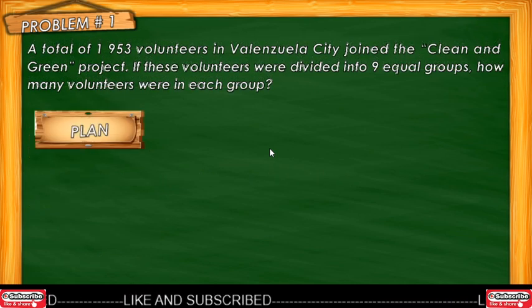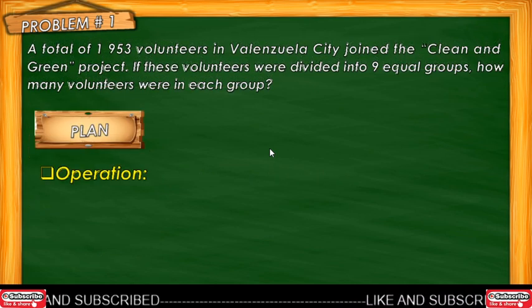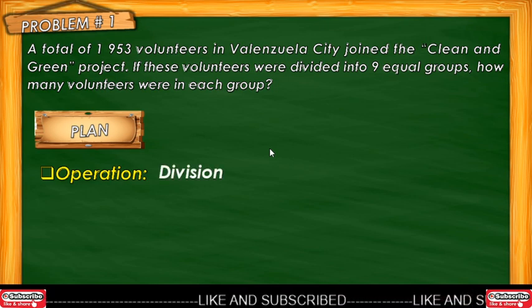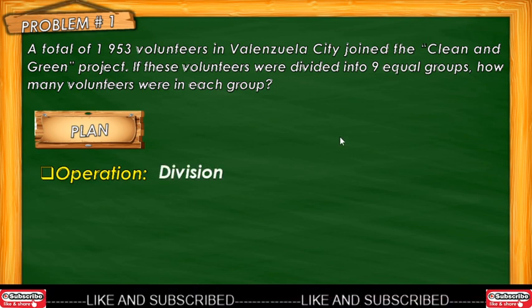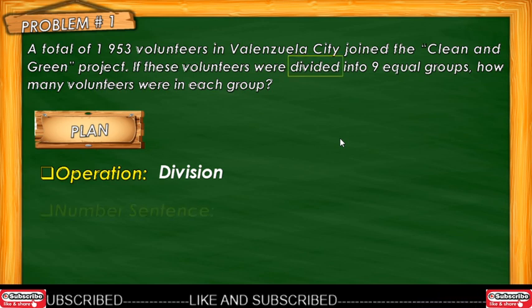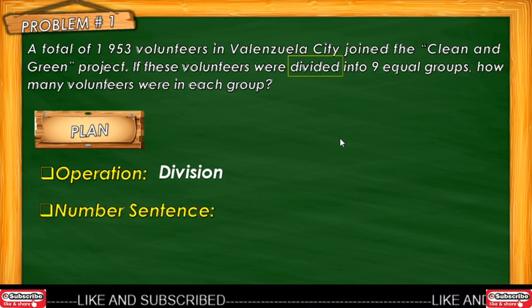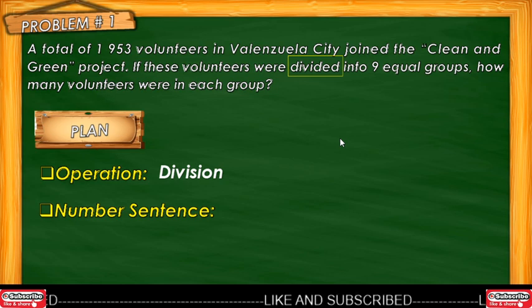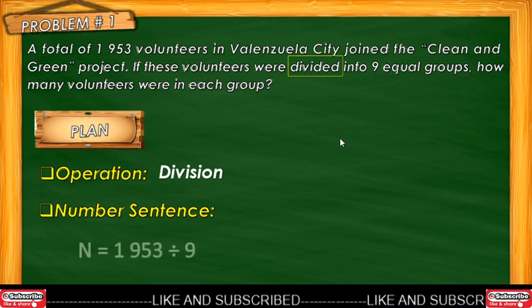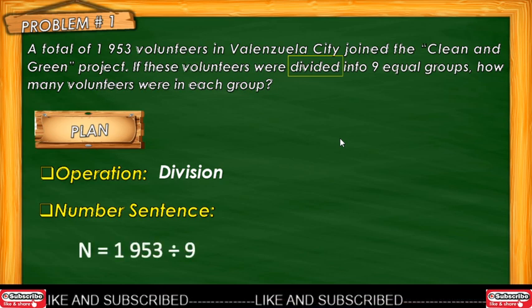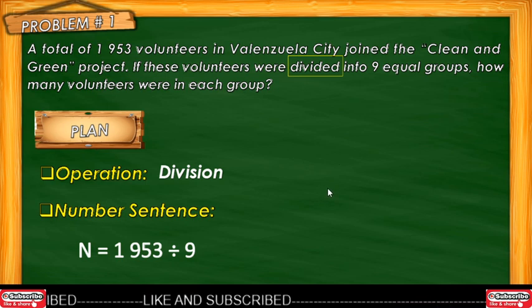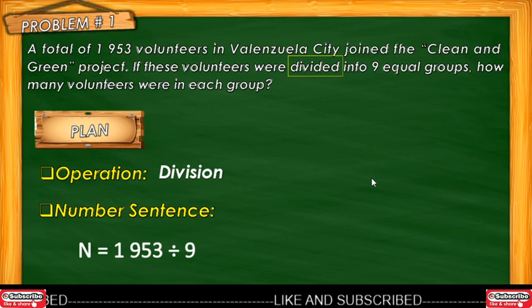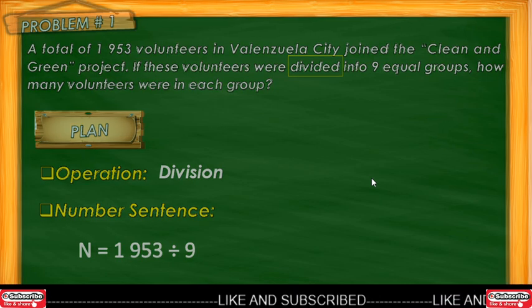For the Plan step: What operation should be used? Division. What is the number sentence? N is equal to 1,953 divided by 9.